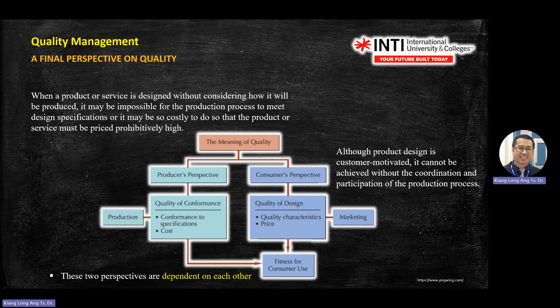A final perspective of quality is shown in this chart, which is important if a question asks you to illustrate the meaning of quality. Quality has two areas: producer and consumer. The producer side has quality of conformance; the consumer side looks for quality of design. Production fits into quality conformance, and marketing fits into quality of design. At the end, it all comes together into fitness for consumer use.